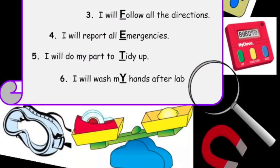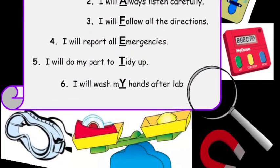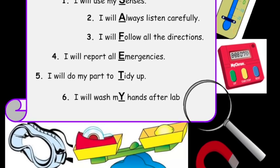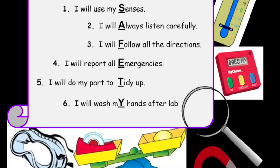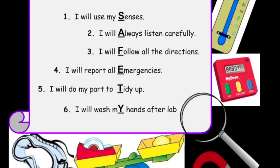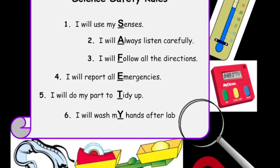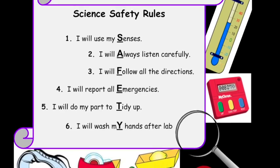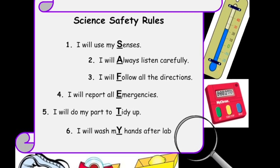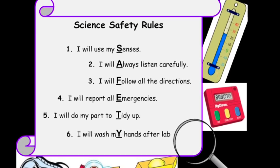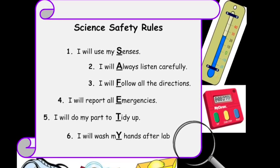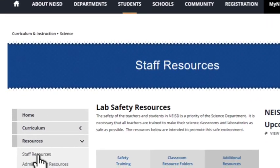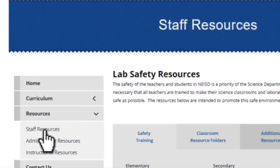It is also a good idea to provide students with a written set of safety rules and a contract for both the student and the parent to sign. Links to the safety contracts can be found in this training and on the staff resources page of the NEISD Science website.